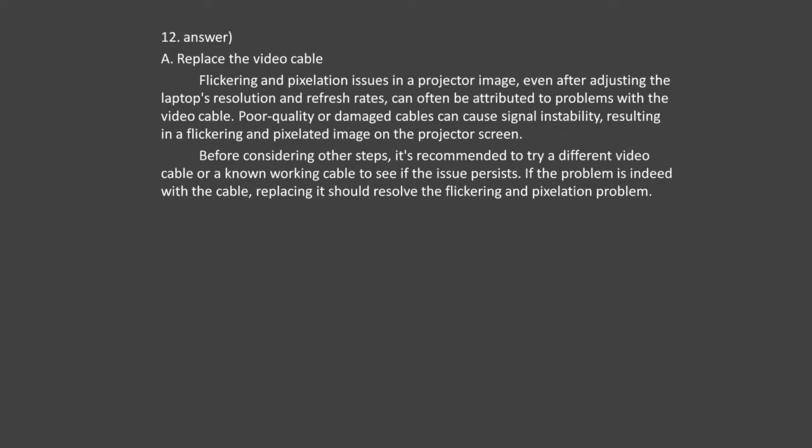Question number 44. A technician is installing a DSL modem in a data center. Which of the following connectors would be used to connect the DSL modem to the internet provider line? Option A: BNC. Option B: RJ11. Option C: RS232. Option D: F connector. Answer number 44: The connector typically used to connect a DSL modem to the internet provider line is Option B — RJ11. RJ11 connectors are commonly used for telephone lines, including DSL (digital subscriber line) connections, which use existing telephone lines for broadband internet access. These connectors are designed to fit standard phone jacks and provide the necessary interface between the DSL modem and the telephone line.